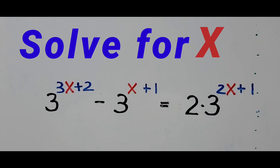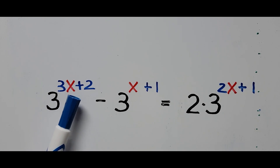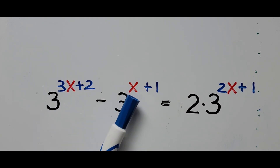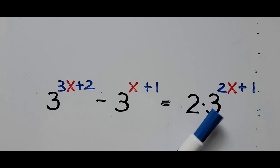Hello everyone, welcome to Kaciano Easy Math. This video is about solving another given exponential equation: 3 to the power 3x plus 2, minus 3 to the power x plus 1, equals 2 times 3 to the power 2x plus 1. We're going to find the value of x. For those new to my channel, please don't forget to like and subscribe for more videos.